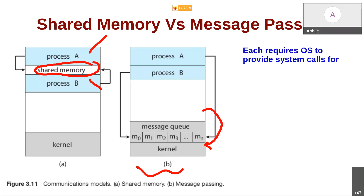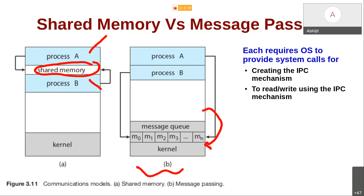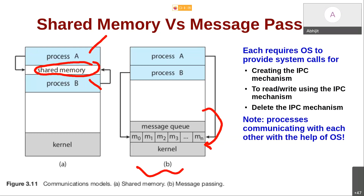For implementing this, there are system calls given by the kernel — for example, to create a shared memory region, access it, create a message, send or receive it. The kernel gives system calls to processes for carrying out these tasks: to create an IPC mechanism (either shared memory or message passing), to read or write using it, and also to delete it, because processes should normally delete a kernel resource when done.